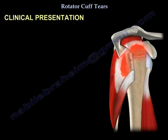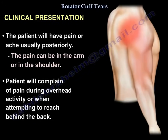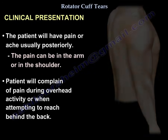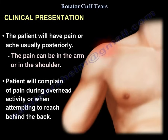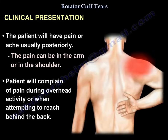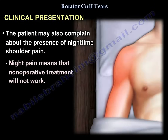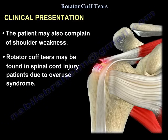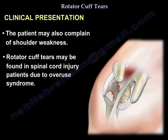Regarding clinical presentation, the patient will have pain or ache, usually posteriorly. The pain can be in the arm or the shoulder. The patient will complain of pain during overhead activity and when they try to reach behind the back. The patient may also complain of night pain, which indicates that non-operative treatment will not work. Patients also complain of weakness. Rotator cuff tears may also be found in spinal cord injury patients due to overuse syndrome.